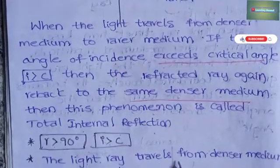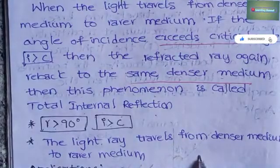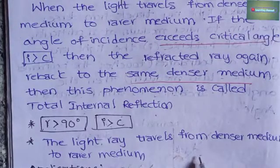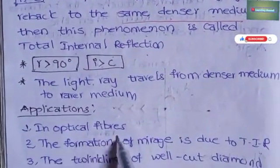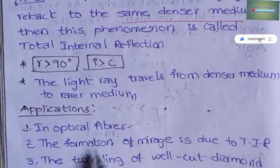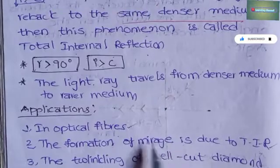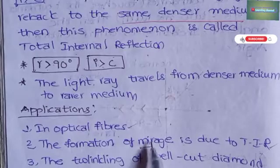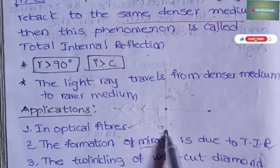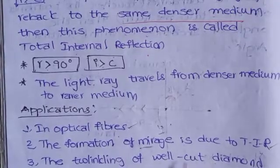The applications of total internal reflection are: first, it is used in optical fibers. Second, the formation of a mirage is due to total internal reflection. Third, the twinkling of a well-cut diamond is also due to total internal reflection.